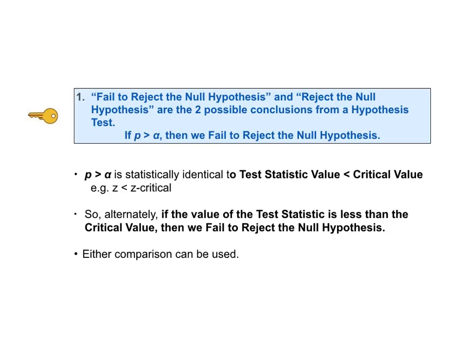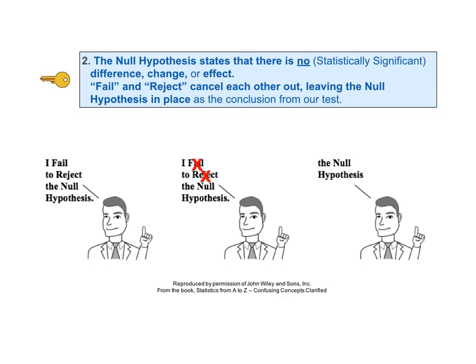The null hypothesis is a statement which says that there is no statistically significant difference, change, or effect. If we fail to reject the null hypothesis, then the null hypothesis stands, because fail and reject cancel each other out. So if the conclusion from the test is fail to reject the null hypothesis, then we conclude that there is no difference, no change, or no effect — which is exactly what the null hypothesis says.